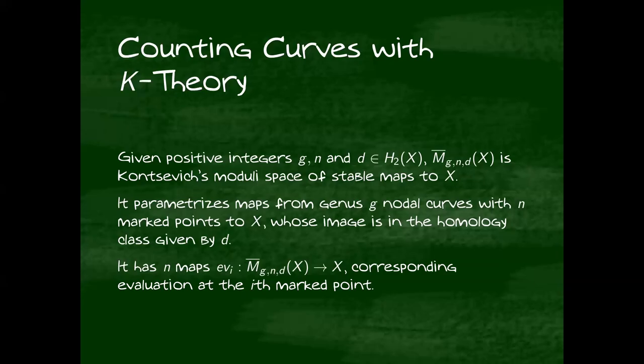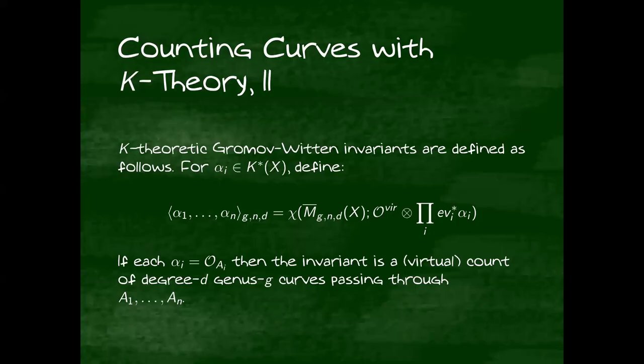We can use the K-theory of this space to answer some enumerative questions about X. And we do this through K-theoretic Gromov-Witten invariants, which are defined as follows. Given some inputs, alpha_i in the K-theory of X, you pull them all back by the corresponding evaluation maps. And then you take the holomorphic Euler characteristic. You push forward to a point. Again, if you're familiar with usual Gromov-Witten invariants, this is the same thing except instead of integration, we're doing K-theoretic push forwards. To account for the fact that this moduli space is not smooth, we have this virtual structure sheaf here, but you don't have to worry about it. It doesn't show up in the examples we consider.